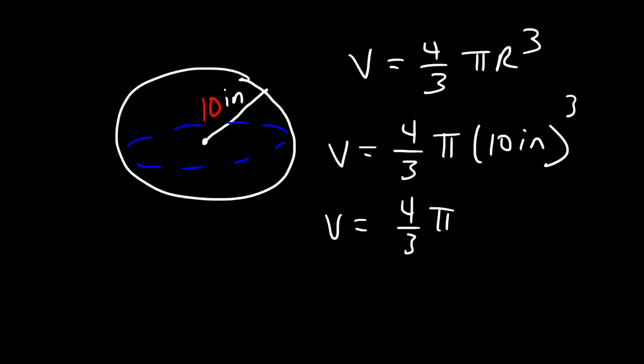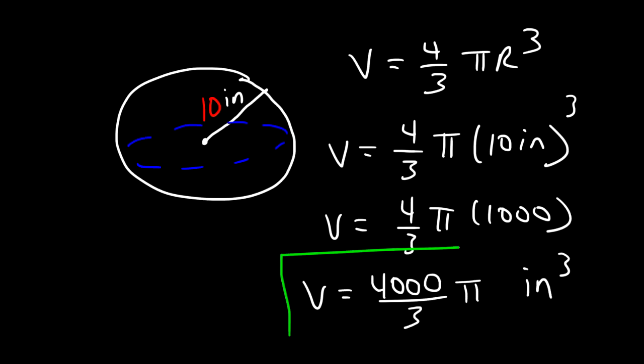10 to the third is 10 times 10 times 10, which is a thousand. And 4 times a thousand is 4,000, so it's going to be 4,000 over 3 times pi cubic inches. And so that's the volume of this particular sphere.